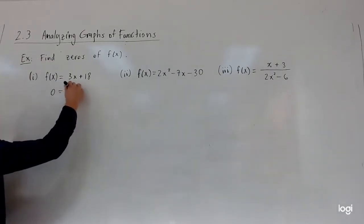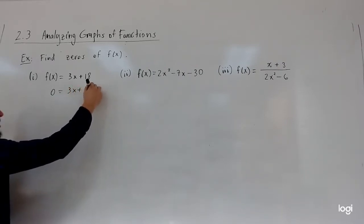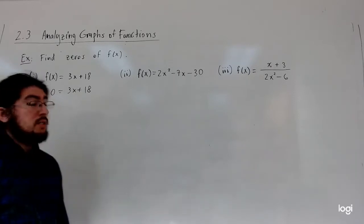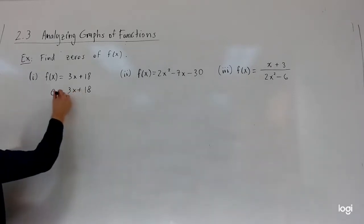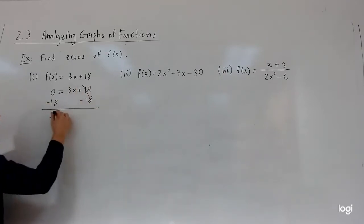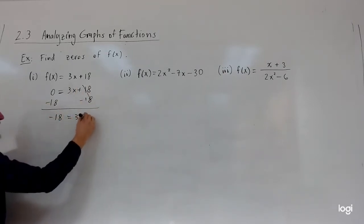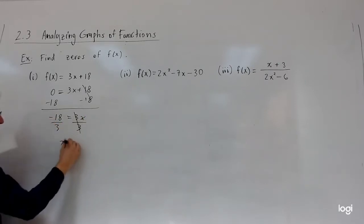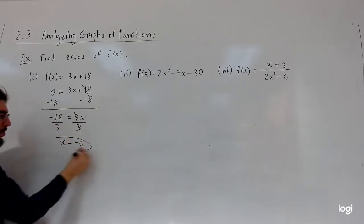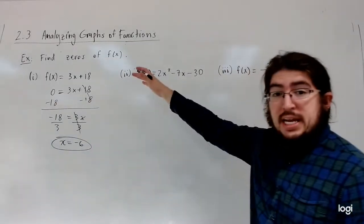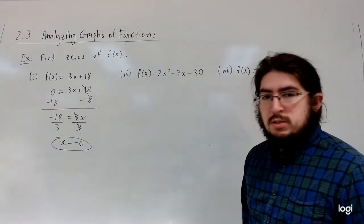For the first example, we want an x value such that 3x plus 18 is equal to zero. Subtracting 18 to the other side and then dividing by three, we get x is equal to negative six. So this is a zero of the function, because when you plug negative six in, you get zero as a result.